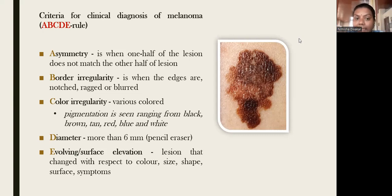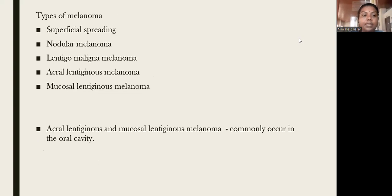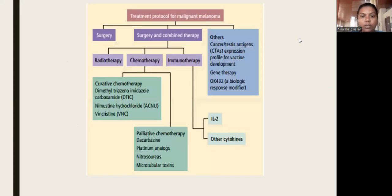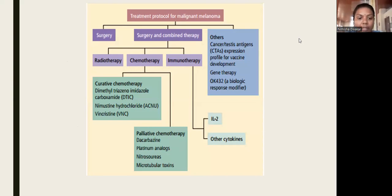The types of malignant melanoma are: superficial spreading, nodular melanoma, lentigo maligna melanoma, acral lentiginous melanoma, and mucosal lentiginous melanoma. The acral lentiginous and mucosal lentiginous melanoma are the most common types seen in oral characters. Treatment includes surgery, combined therapy, and palliative therapy — specifically surgery with concomitant radio-, chemo-, and immunotherapy. For chemotherapy, we can give interferon, and for immunotherapy, interleukins and other cytokines. Palliative chemotherapy and novel methods like gene therapy and biologic response modifiers are also used.